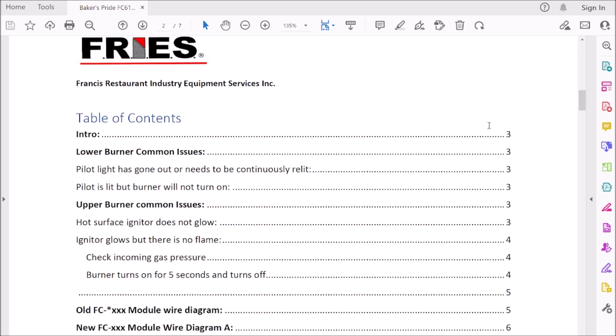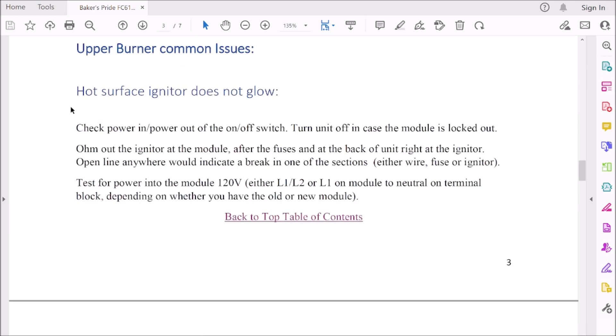Like I said earlier, there is no service manual for this. I'm a notorious note taker and from writing notes from years and years and years, I've written all kinds of service manuals. So let's jump into this one here. Upper burner common issues: hot surface igniter does not glow. Check power in and out of the switch.